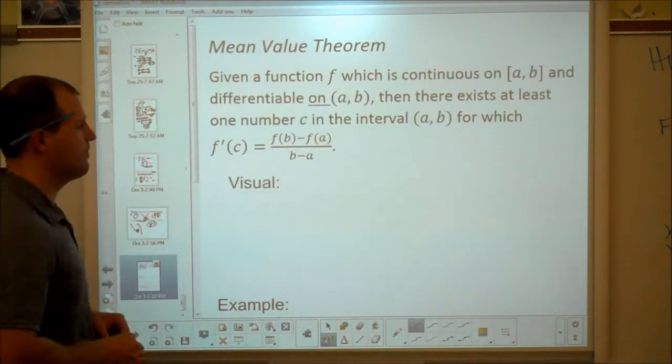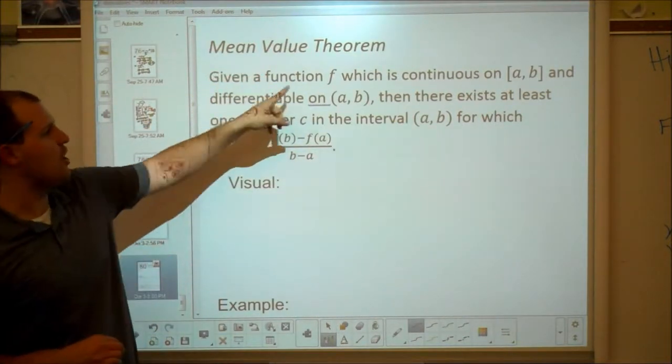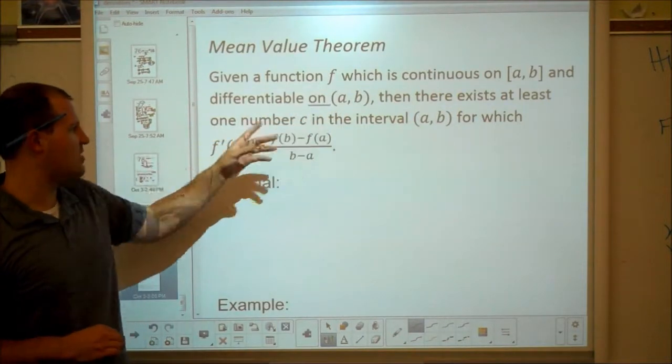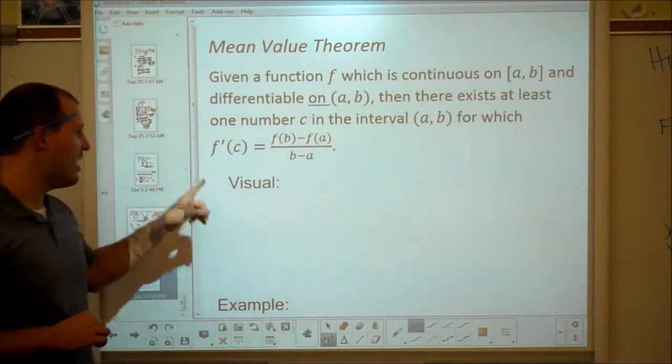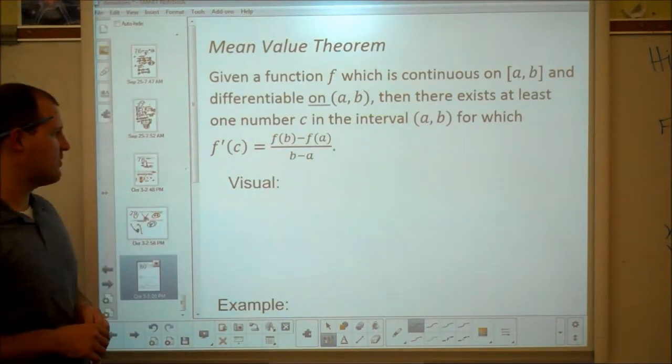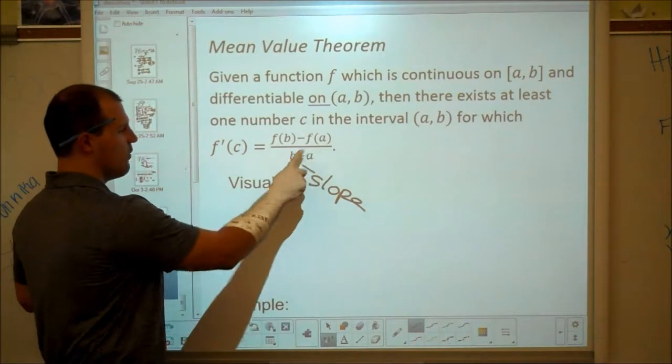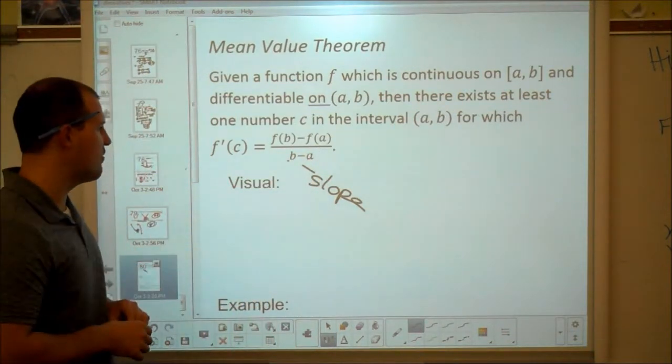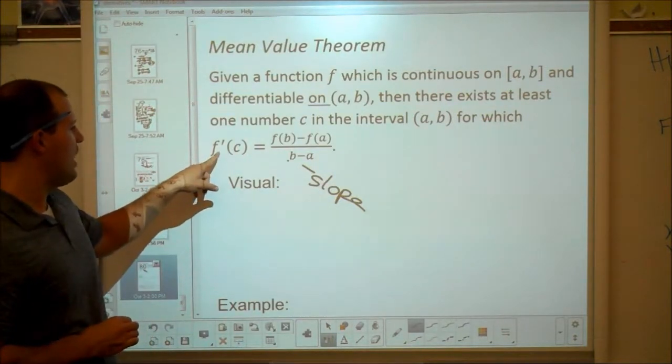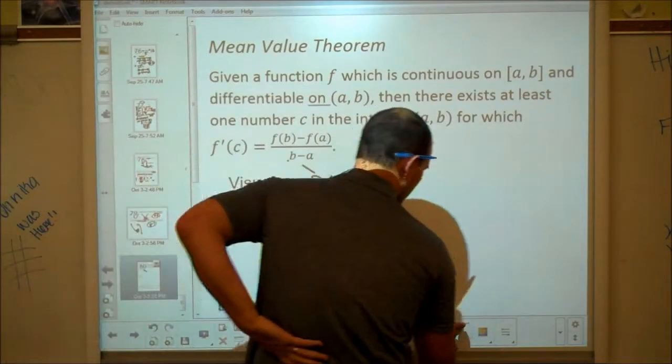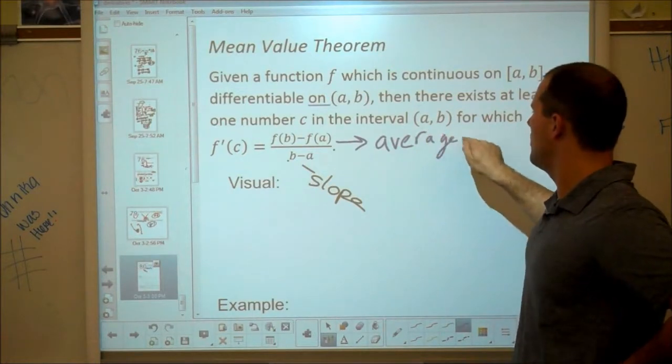We have a function. It's continuous on the closed interval from a to b, and differentiable on the open interval from a to b. Then, if that's the case, there's going to be at least some number c in the interval from a to b. Again, those are x values. For which, we have this. Now, there's a couple things I want you to notice. First of all, this right here is just a slope. y2 minus y1 over x2 minus x1. It's just a different way of writing slope. And look at that. Derivatives are slopes. We've learned that. The derivative at some point is going to equal this. Well, it's a little more interesting than that. The other thing I want you to know, this also represents an average rate of change.